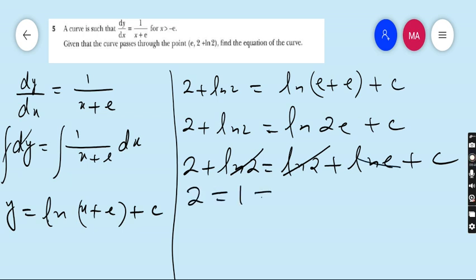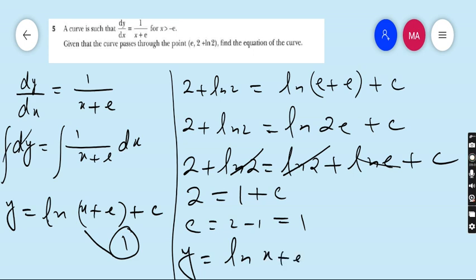ln 2 cancel by ln 2. 2 is equals to ln and e cancel. If you cancel ln and e, you will have 1. Don't forget this. Plus c. 2 minus 1 is 1. Now put this value of 1 in equation number 1. Y is equals to ln x plus e plus c. C is 1. This is our final answer, question number 5. So hope you enjoy this question.